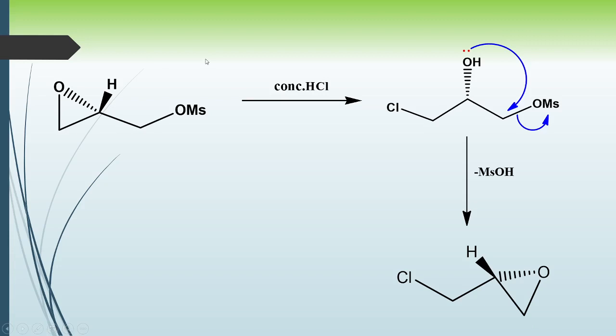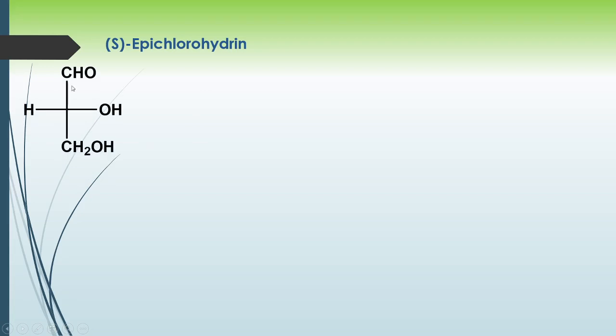Hence we write R-epichlorohydrin. In this synthesis we started from glyceraldehyde rather than D-mannose, and by using glyceraldehyde we can also synthesize both R and S epichlorohydrin. Now let's see the synthesis for S-epichlorohydrin.